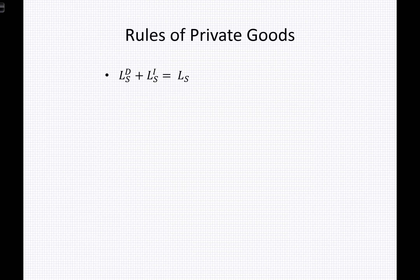Let's take a look first at the rules of private goods. Private goods are distinguishable from public goods in that a private good is rival and it's excludable. I think labor is a private good.